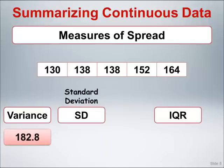For this set of five points, the variance is 182.8.